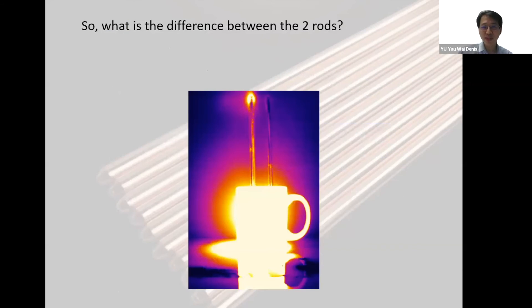So let's go back to our experiment and see what is the difference between the two rods. The one on the left hand side is actually a heat pipe, so the heat conducts faster. The one on the right is just a copper tube.